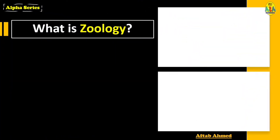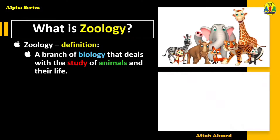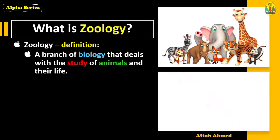So what is zoology? Let's see its definition first. Zoology is a branch of biology that deals with the study of animals and their life. That means zoology is a specific study of animals only — no plants are involved in this case.